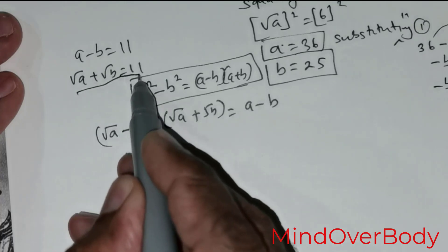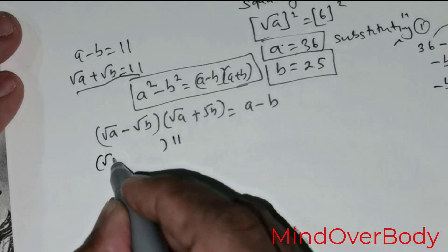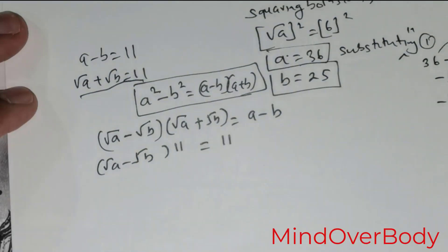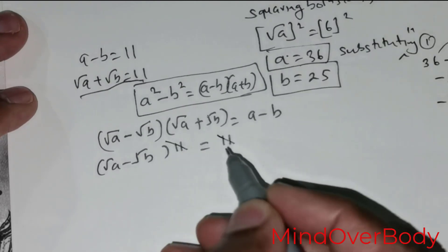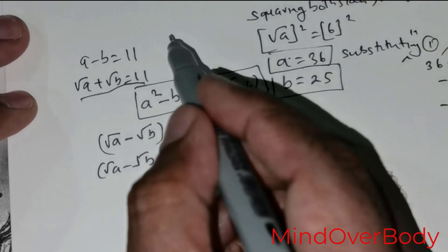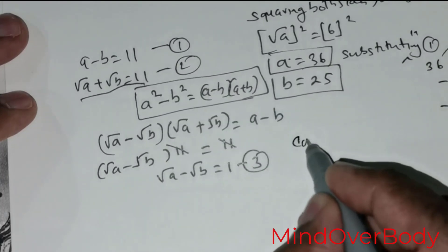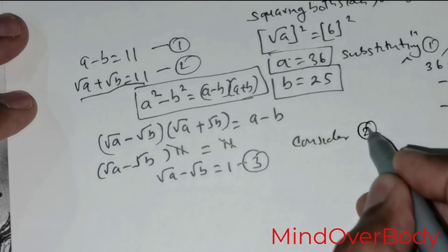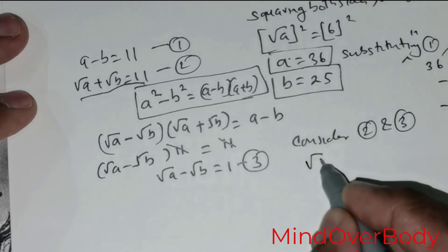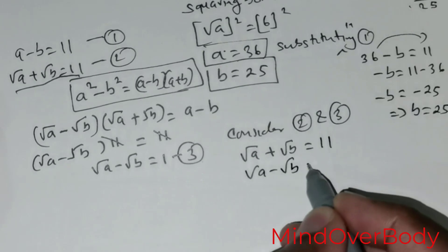We know that root of A positive root of B is 11, so this becomes 11 times root of A negative root of B. But A negative B is also equal to 11. So from here, we can cancel the 11, and that means root of A negative root of B is equal to 1. Taking this as equation 3: equation 2 is root of A positive root of B equals 11, and equation 3 is root of A negative root of B equals 1.